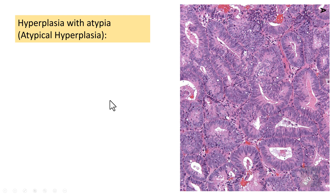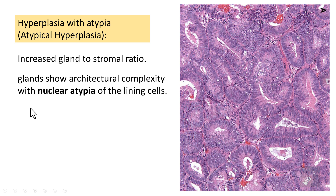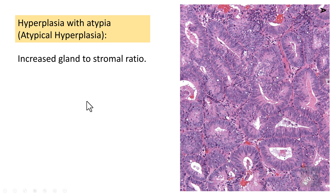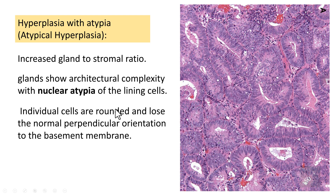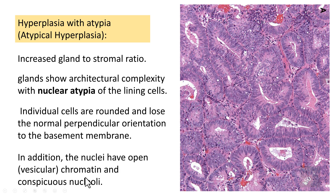Atypical hyperplasia also shows an increased gland-to-stromal ratio, and more glands show architectural complexity. However, the most important feature is nuclear atypia of the lining cells. The individual cells are rounded and lose their normal perpendicular orientation to the basement membrane. The nuclei can also show vesicular chromatin and sometimes conspicuous nucleoli.